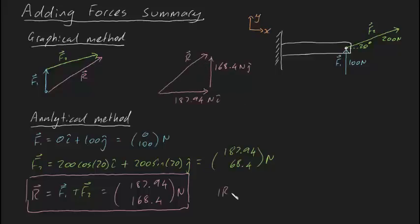Well, we can find that using Pythagoras, the magnitude of our resultant force vector is going to be equal to the square root of 187.94 squared, plus 168.4 squared.